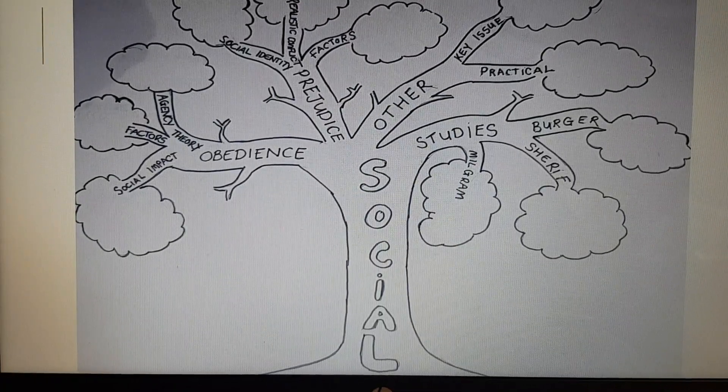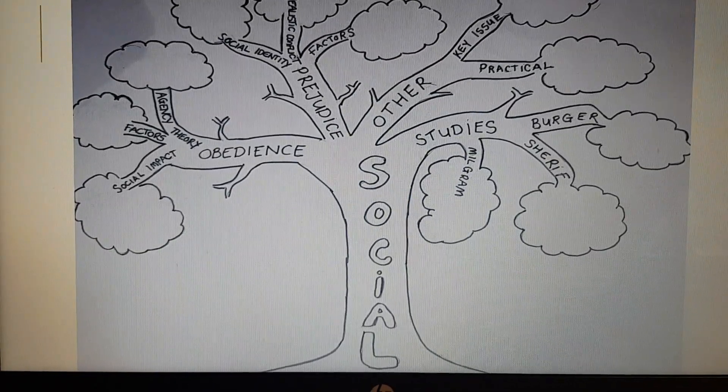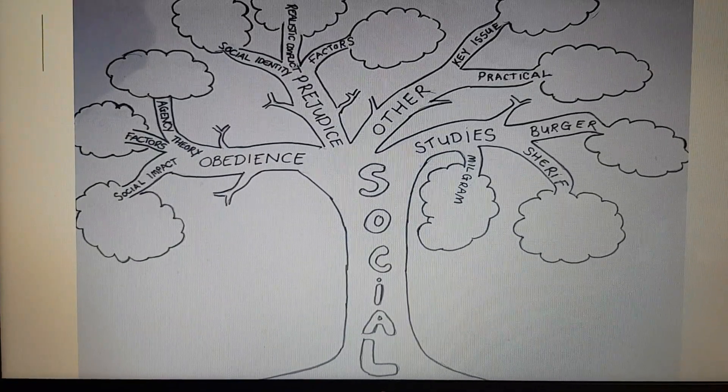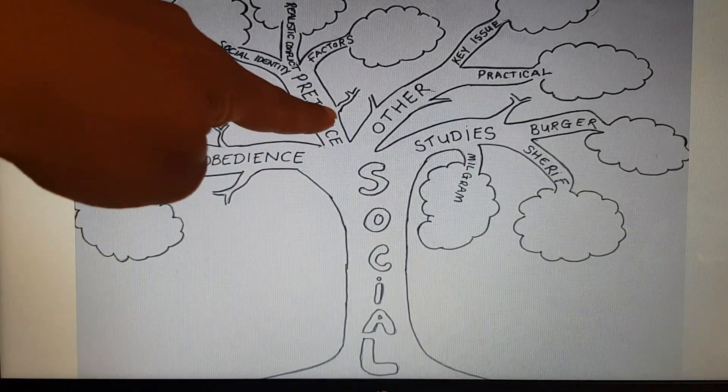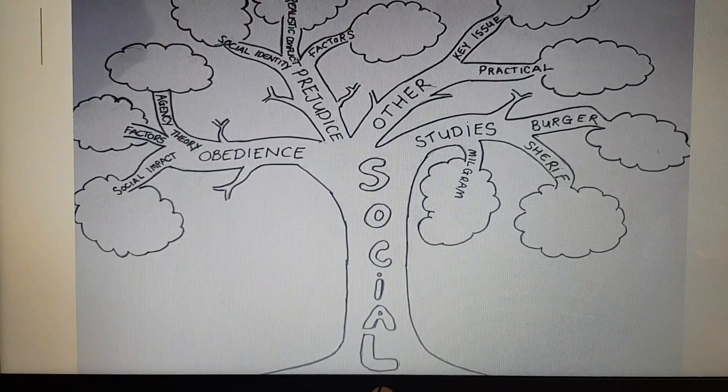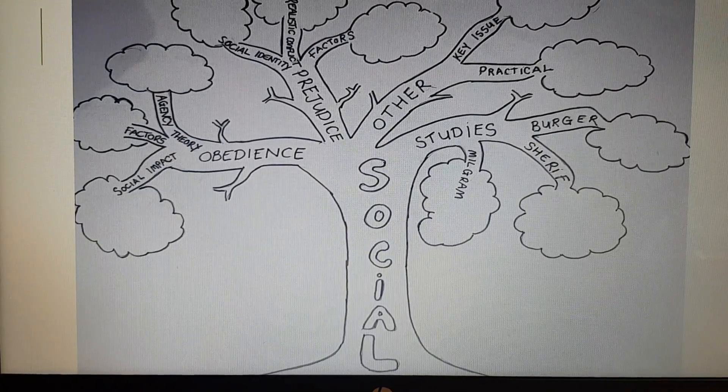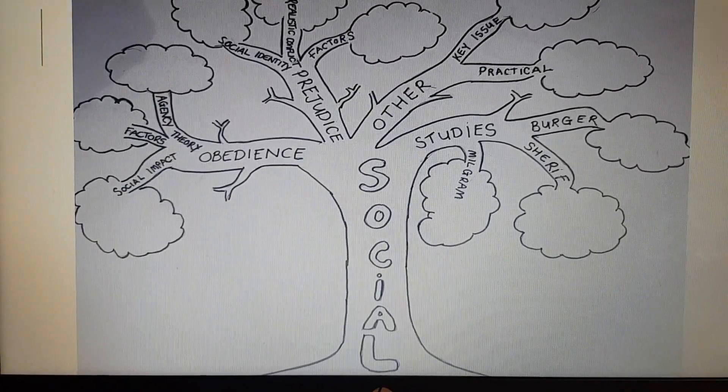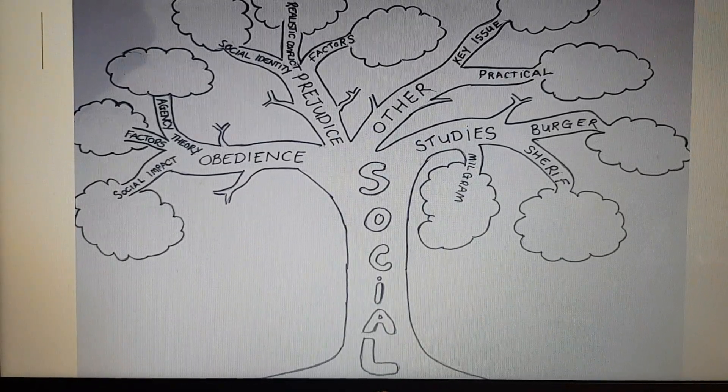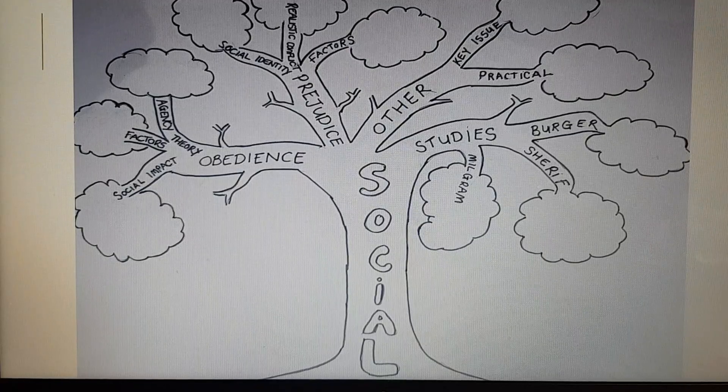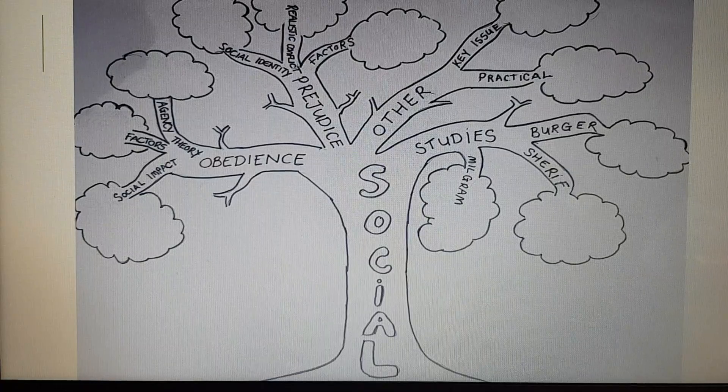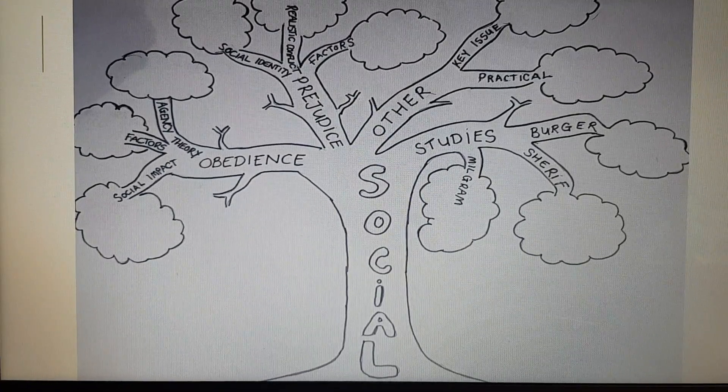Now what I wanted to talk about was how this mind map is organized. So firstly you can see there are thicker branches here. These are the main topics, so obedience, prejudice, and there's also other areas that don't really come under any umbrella, and then studies. So your tree will have the main branches which are the main topic areas, and then those topic areas will branch off into smaller branches.